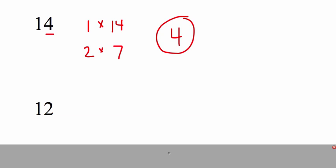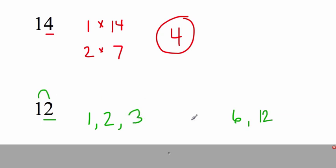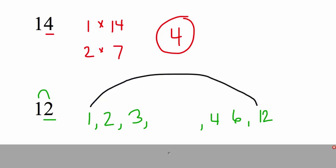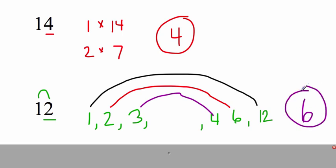Here's another one — list all the factors of 12. Try this along with me. What times what equals 12? The easiest one is 1 times 12. It ends in a 2, so it's divisible by 2: 2 times 6 equals 12. And 1 plus 2 equals 3, which means it's divisible by 3, so 3 times 4 equals 12. It's not divisible by 5, 7, 8, 9, 10, or 11. So the number 12 has 6 total factors. The nice thing about factor rainbows is that the numbers are already in numerical order from smallest to greatest for you.